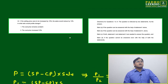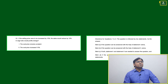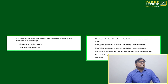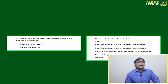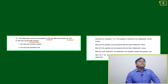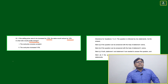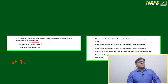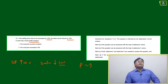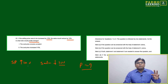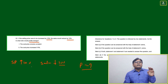Question 1: If the selling price were increased by 10 percent and sales would reduce by 10 percent, in what ratio does the profit change? So the question is asking: if selling price increases by 10 percent and sales decrease by 10 percent, can we calculate how the profit changes?